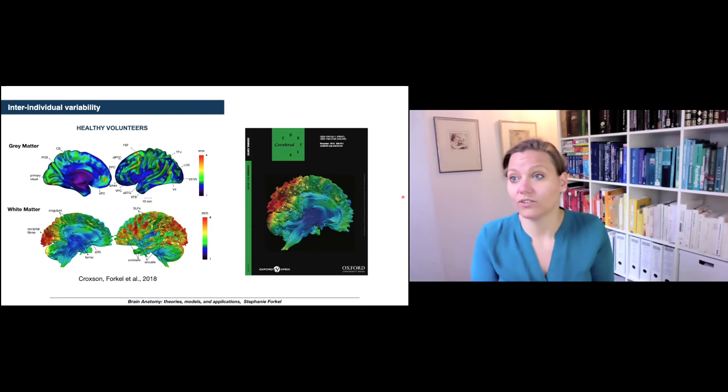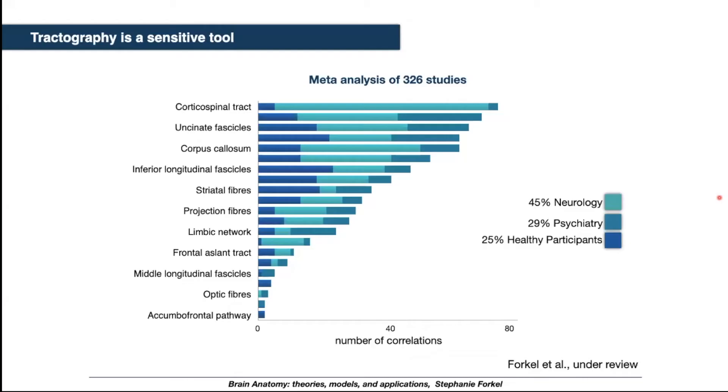This was super exciting, but the next step that we wanted to achieve is to see if this variability actually has a clinical cognitive meaning. So we did a meta-analysis of 326 studies where we looked at the structural variability and the differences in cognitive functions in healthy control, neurological and psychiatric patients. There's three things here that I want you to take away from this slide. The first one is that most of what we know about the connectional anatomy of the brain from tractography we actually know from patients. The majority of studies were conducted in neurological patients followed by psychiatric patients, and only 25 percent were done in healthy controls.